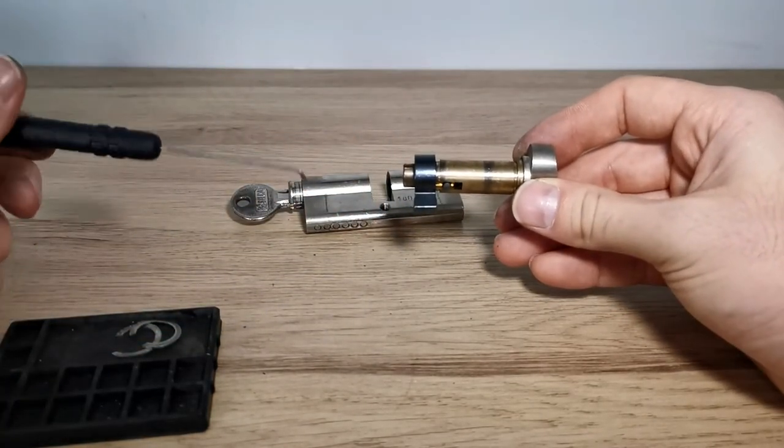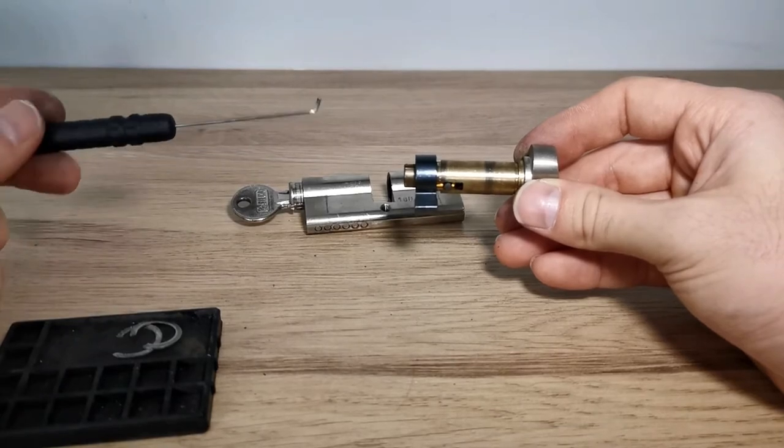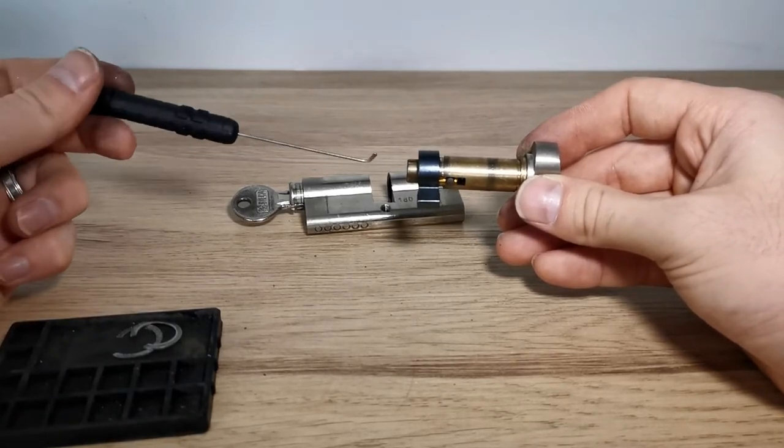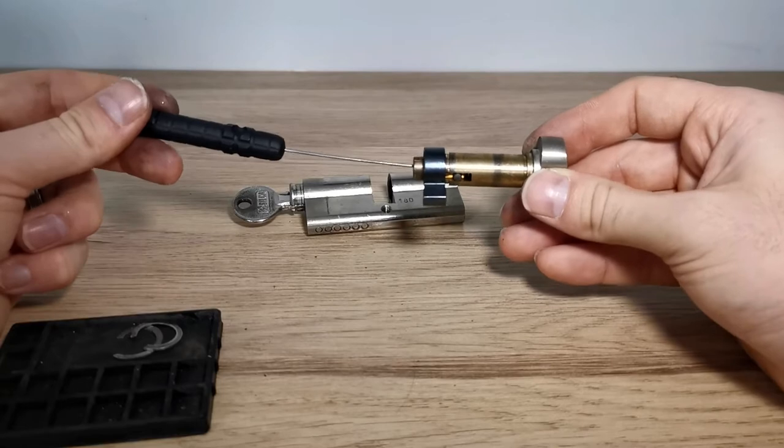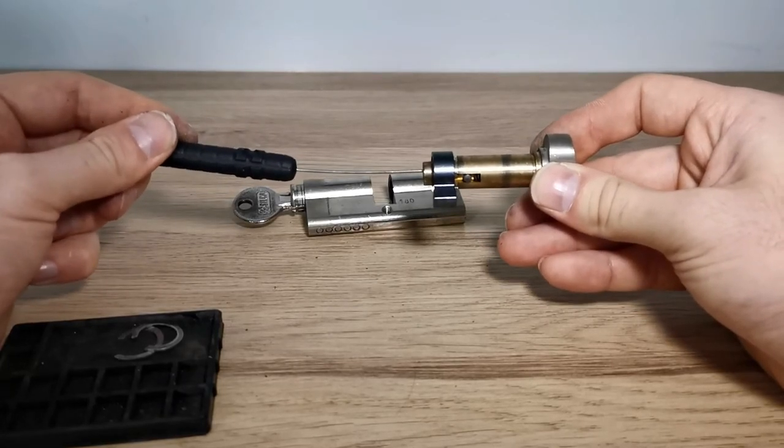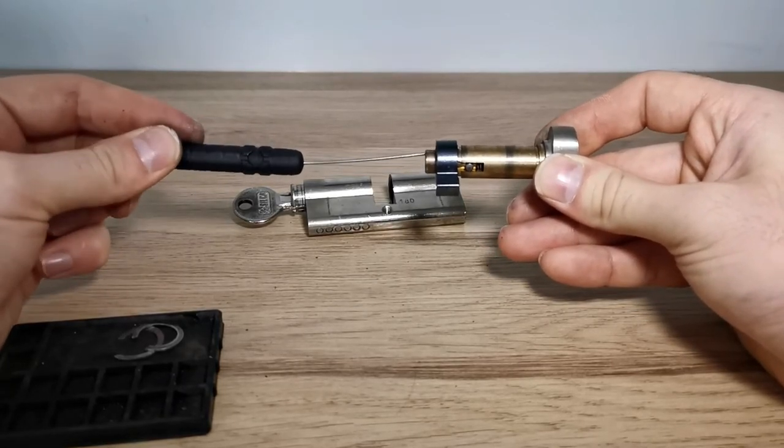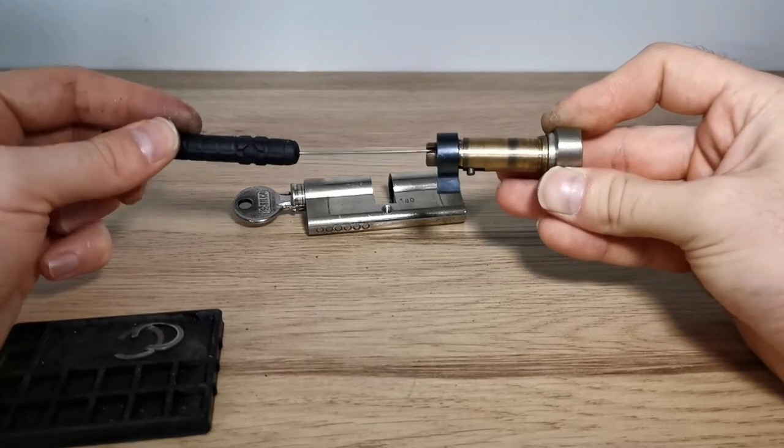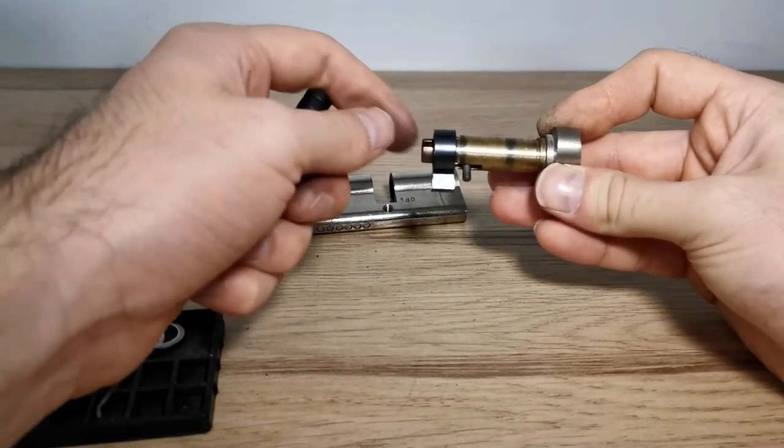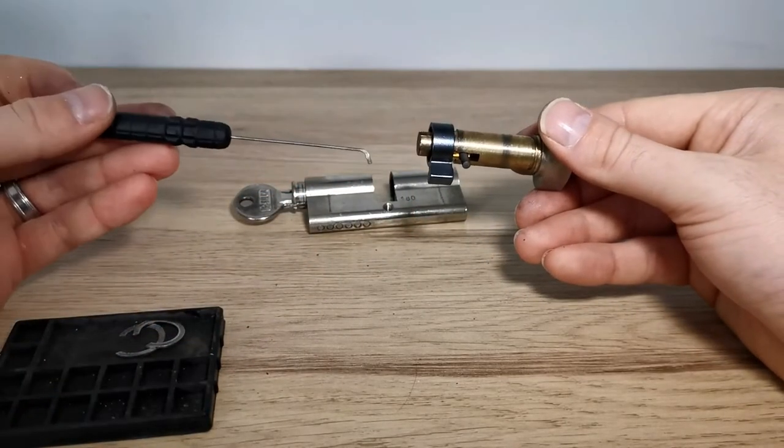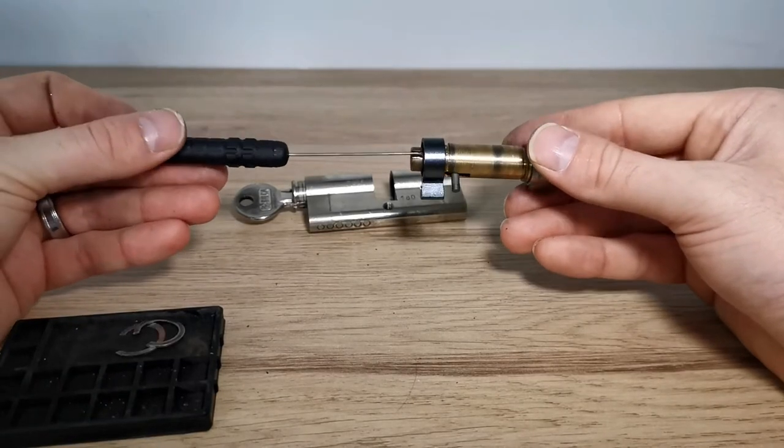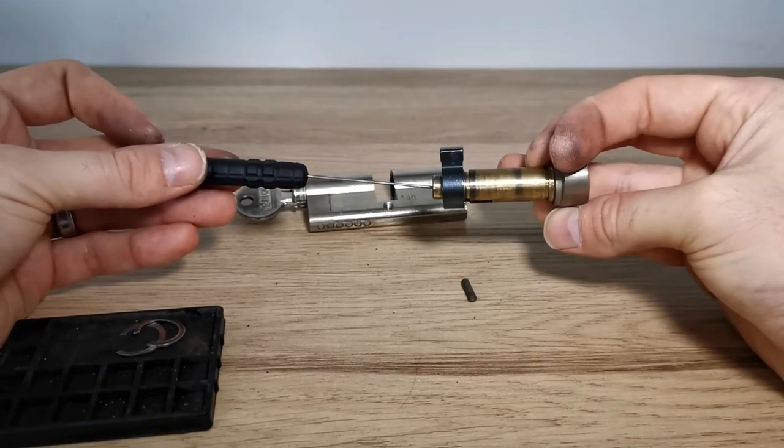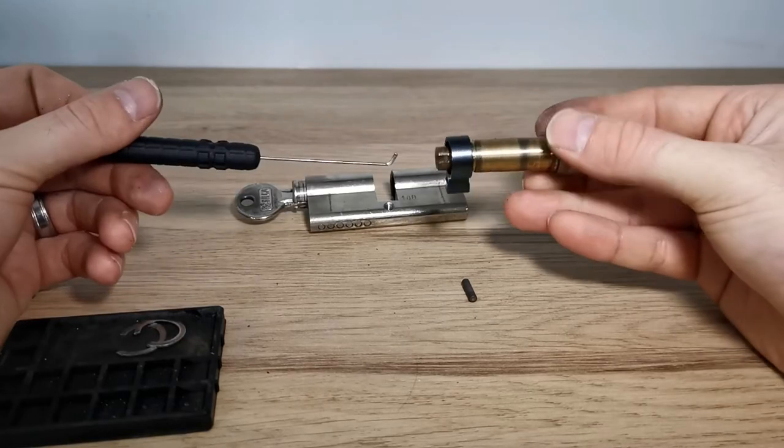So as we insert our bypass tool and push it right away to the back with a little bit of force, as I was saying, and we begin to turn it, it will then in turn grab a hold of this driver and enable us to turn the thumb turn and the cam. So that's how it works.